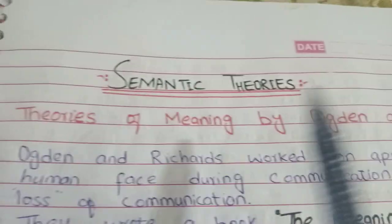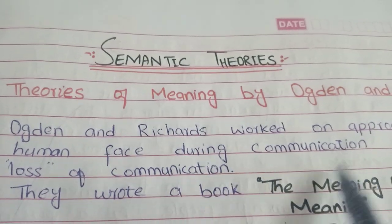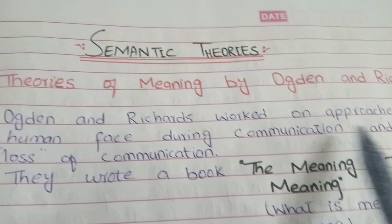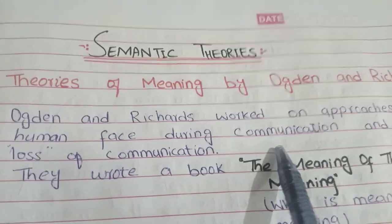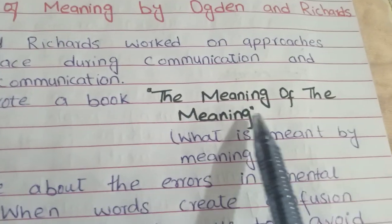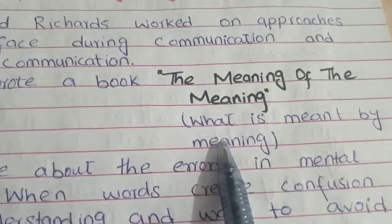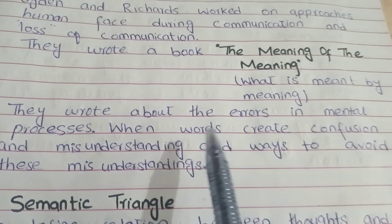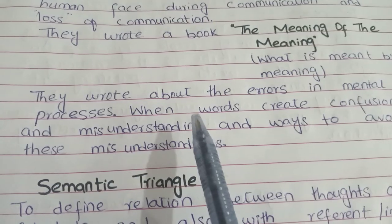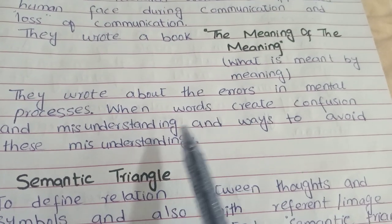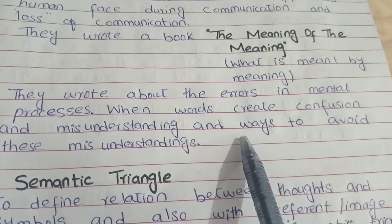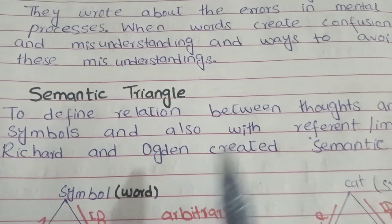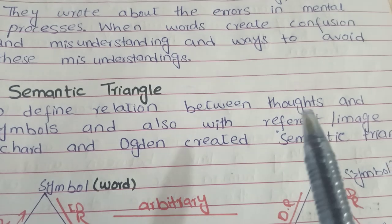Ogden and Richards worked on approaches and problems humans face during communication. They wrote a book, 'The Meaning of the Meaning,' which explores what is meant by meaning. They wrote about the errors of mental processes — when words create confusion, when communication breaks down, and when words cause misunderstandings — and ways to avoid these misunderstandings. They gave the semantic triangle, which defines the relation between symbol, image, and thoughts in our mind.